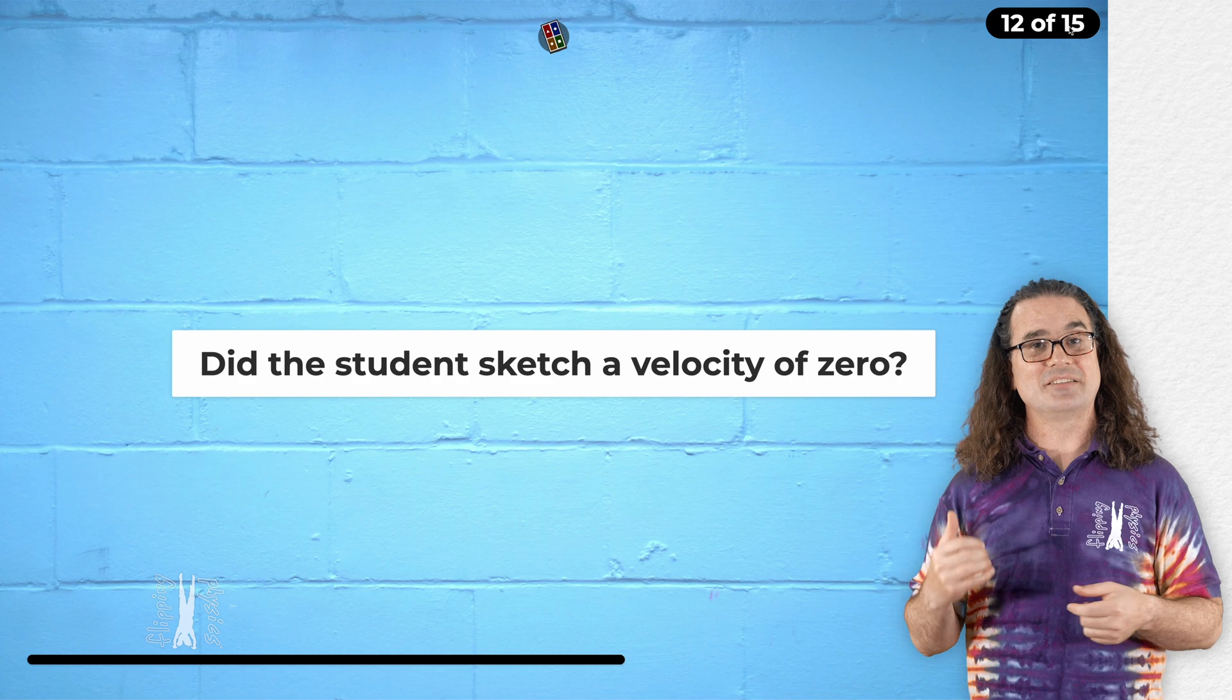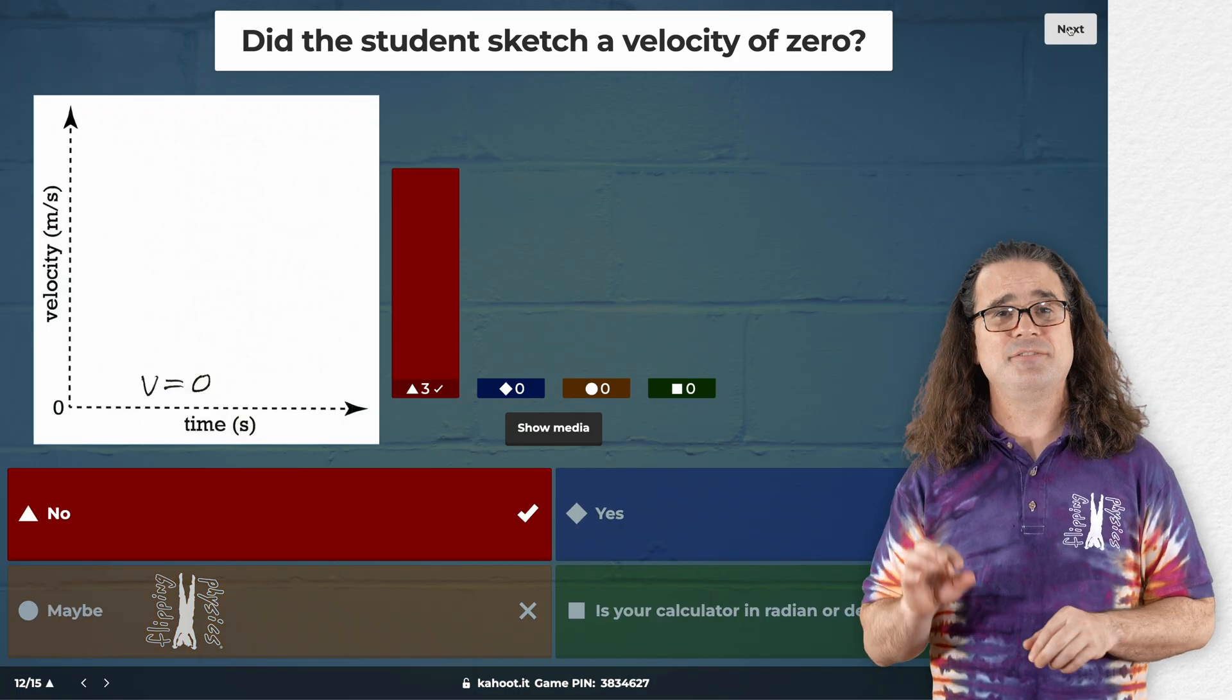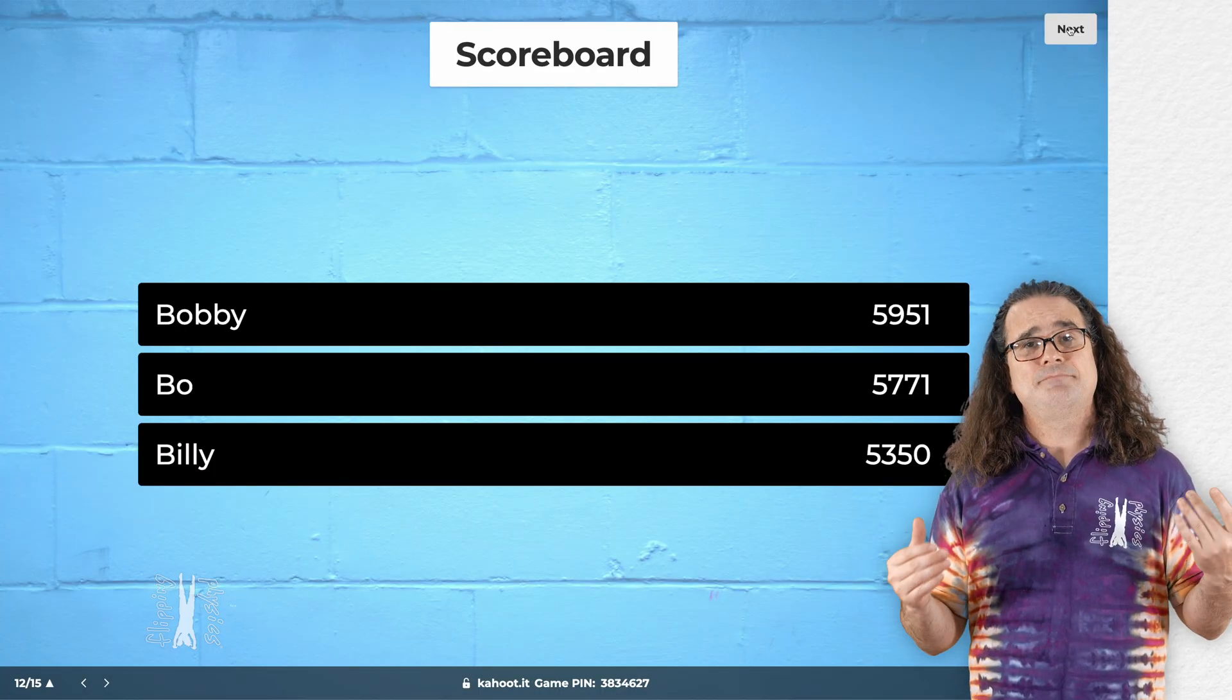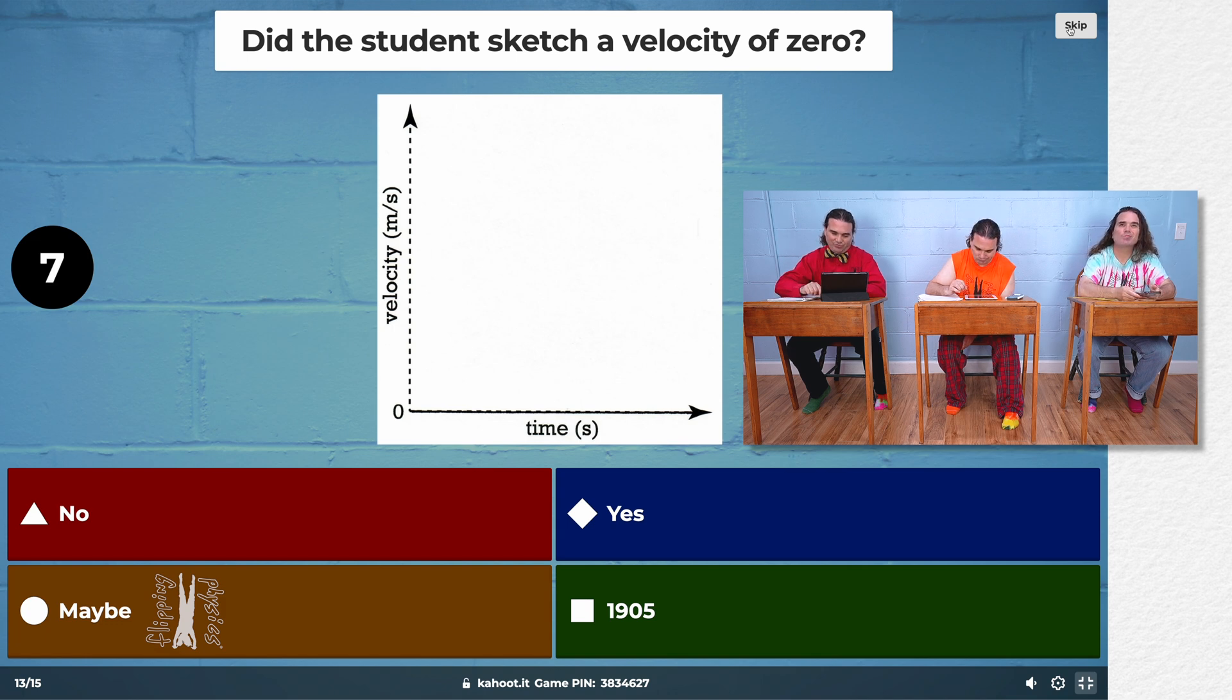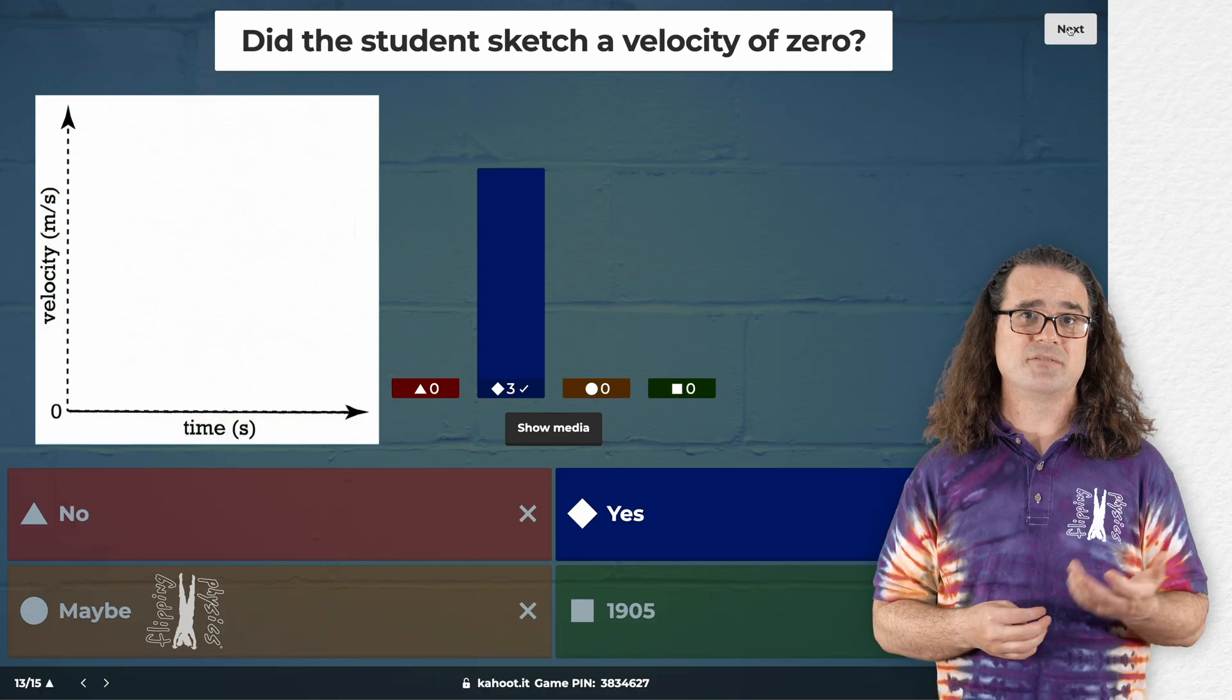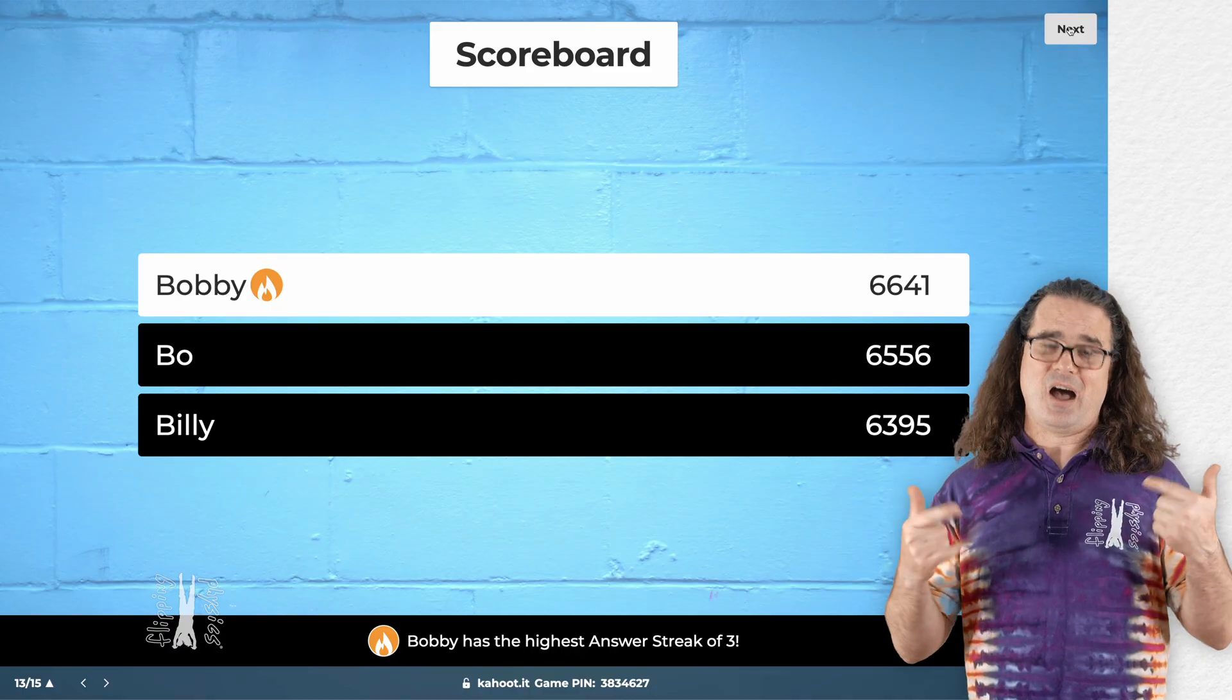Next question. Again, did the student sketch a velocity of zero? Right. Again, if you do not sketch something, you cannot receive points when the instructions are to sketch something. And Bobby is still in the lead. Next question. Again, did the student sketch a velocity of zero? Yeah. Correct. This is how you sketch a constant velocity of zero. You draw a line over the horizontal axis. And Bobby is still in the lead. And now on fire. Yep.